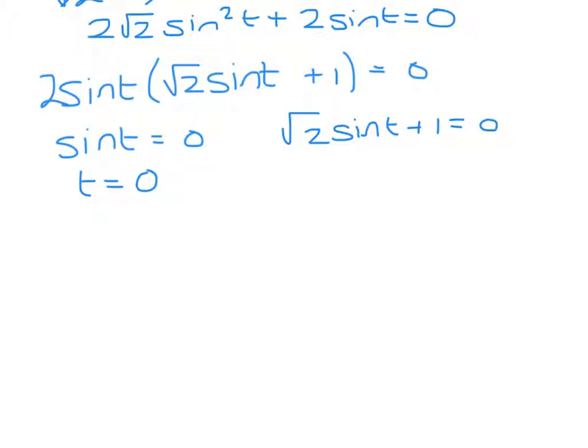Root 2 sin t plus 1 equals 0, so sin t equals minus 1 over root 2. The first answer from the calculator is minus pi over 4. Our limits are pi over 2 to 3 pi over 2.